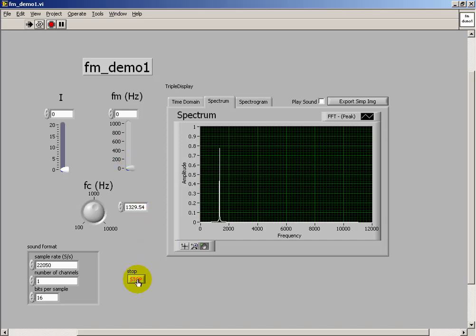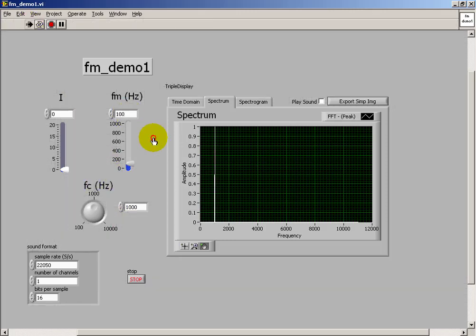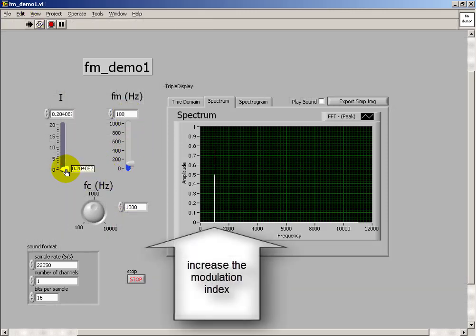So you'll note that as we vary the carrier frequency, we shift that single sinusoidal component around. We need the modulation index to be a non-zero value before we can see any side bands.